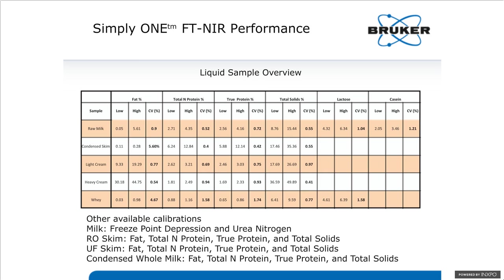Looking at the performance of the Simply One system across several sample types — raw milk, condensed skim, light and heavy creams, and whey — the calibrations were made using samples obtained all over the world with a heavy dose of samples from DQCI's instrument calibration standards program. For fat on raw milk, ranging from 0.05 to 5.61%, the coefficient of variation is about 0.9%. Total nitrogen protein is at 0.52, true protein at 0.72, total solids at 0.55. The coefficient of variation for fat and protein in heavy and light cream are also very good, giving excellent repeatability on those sample types.